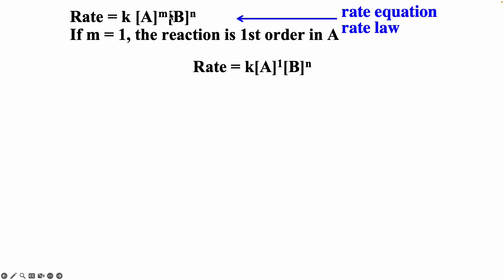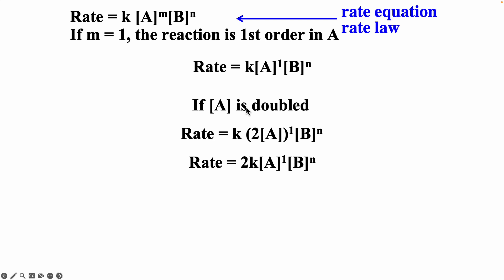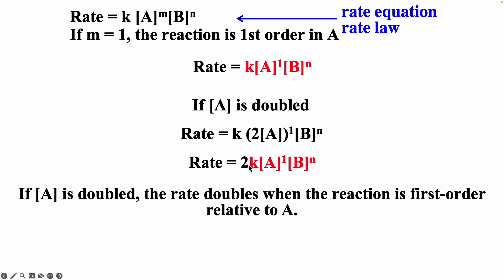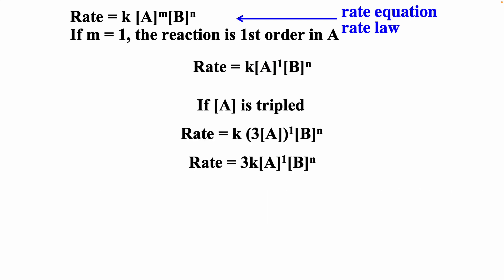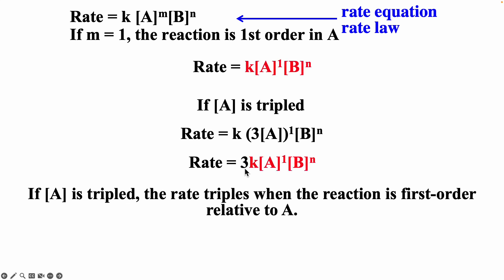If m equals 1, the reaction is first order with respect to A. If we double A — two times A to the first power — the rate would be twice as fast. So if A is doubled, the rate doubles when the reaction is first order with respect to A. If we triple A, then the rate triples — if it's first order and you triple the concentration, the rate should be three times as fast.